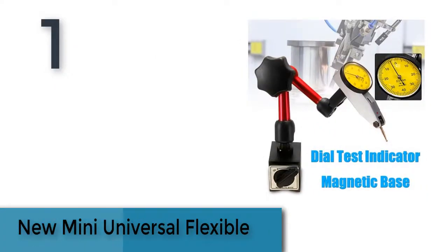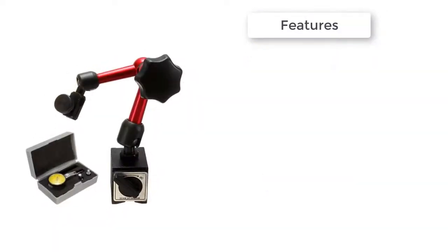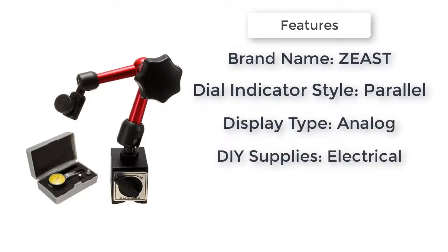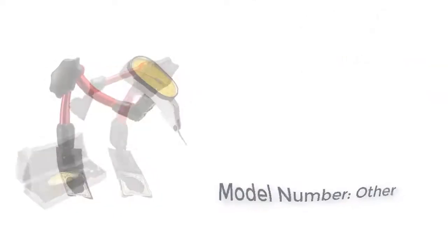The item number one is new mini universal flexible. Ideal for holding lever indicators of any orientation on a machine.